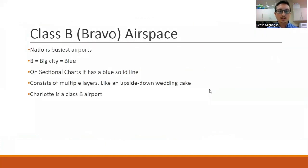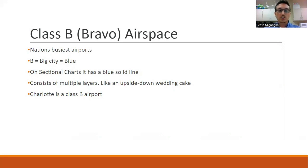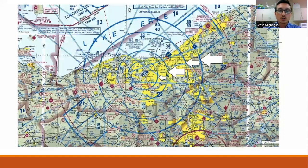Class Bravo airspace — class B — think of this as big cities. This is the nation's busiest airports. B for big city, blue. On the sectional chart, this airspace has a solid blue line. It consists of multiple layers like an upside-down wedding cake. As an example in North Carolina, the Charlotte airport is a hub for American Airlines, it's a busy airport, it's a big city — it's Bravo airspace. Here on the sectional chart, this is actually Cleveland's airport, and you'll see these solid blue lines.